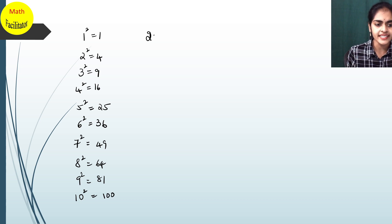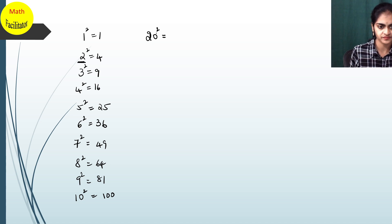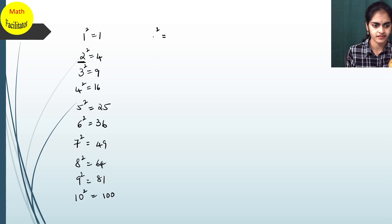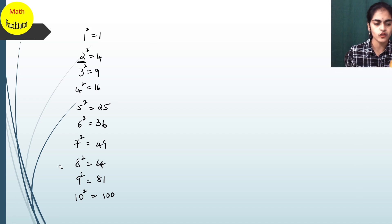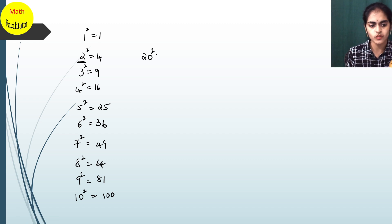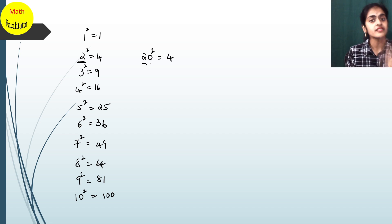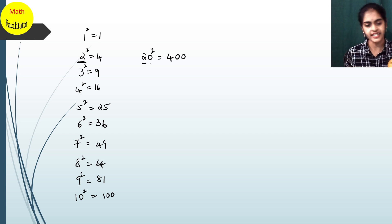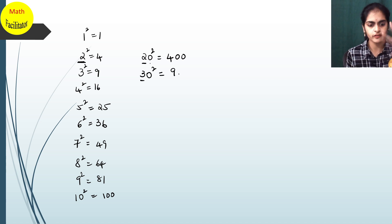Now tell me, what is 20²? Since 2² = 4 and you have 20, you have 2 zeros — so 20² = 400. What is 30²? 3² = 9 and you have 2 zeros, so 30² = 900.